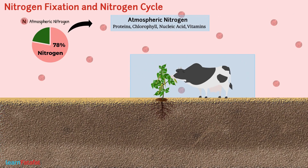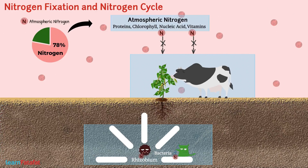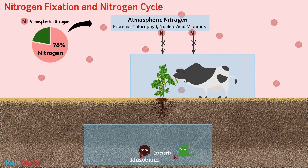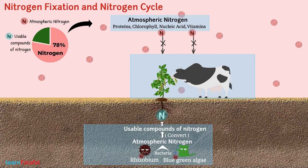Plants and animals cannot take atmospheric nitrogen as such. Instead, certain bacteria such as Rhizobium and blue-green algae present in soil have the ability to convert atmospheric nitrogen into usable compounds of nitrogen. This process is called nitrogen fixation.